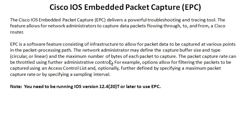You do have some control over this. You can set the buffer size, the type of buffer, and the maximum number of bytes per packet to capture. You can also set this up to use an ACL — an access control list — to filter which packets you're actually capturing, which is a really good idea on a production device because there's going to be a ton of traffic. You also have the ability to get a sampling: instead of capturing every packet, you can capture every nth packet, like every 100th packet that meets your criteria.